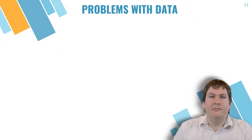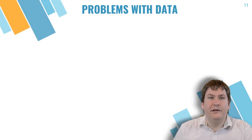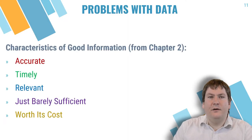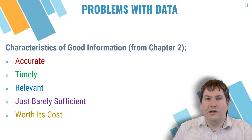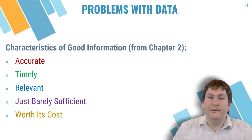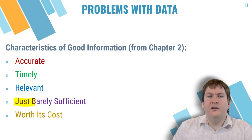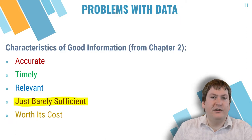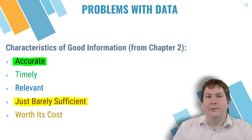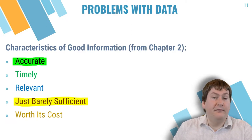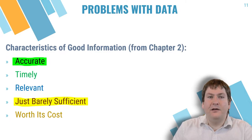Let's move on to the problems with data itself, rather than having too little or too much of it. As we discussed in a previous lecture on chapter 2, for information to be good it must be accurate, timely, relevant, just barely sufficient, and worth its cost. If any of these aren't true, it will impact our decision-making ability. We'll now focus on problems that impact the accuracy of information — a big factor is how clean and accurate our data is that we use to create information for making decisions.